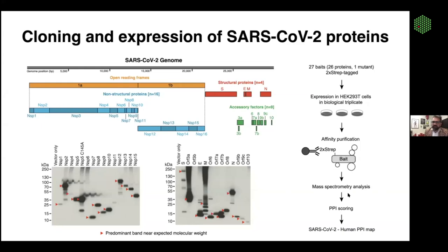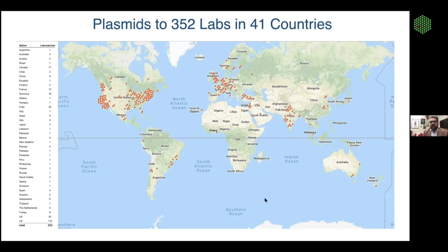We initially put this on bioRxiv at the end of March, and tweeted from our lab that we had these constructs and were happy to send them to whoever wanted them — no MTAs, no strings attached. In a couple of weeks we actually sent out this set of genes to over 350 labs in 40 different countries. I like to say that these plasmids went around the world a lot faster than the virus did.